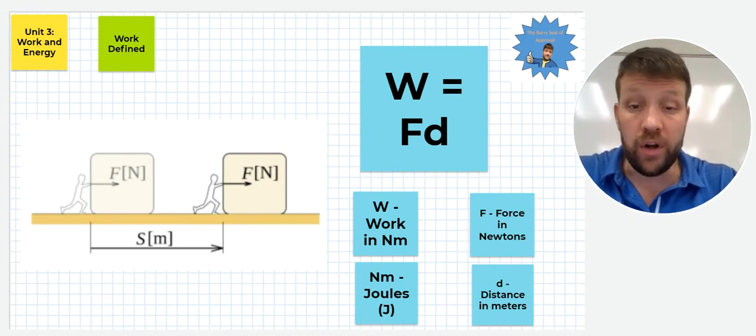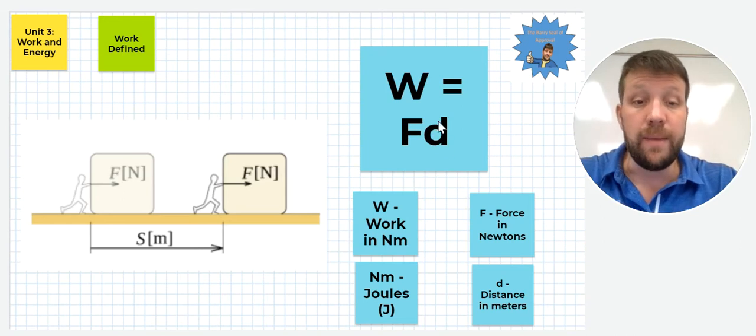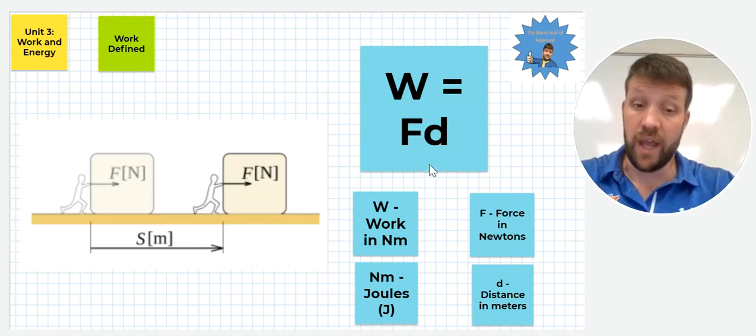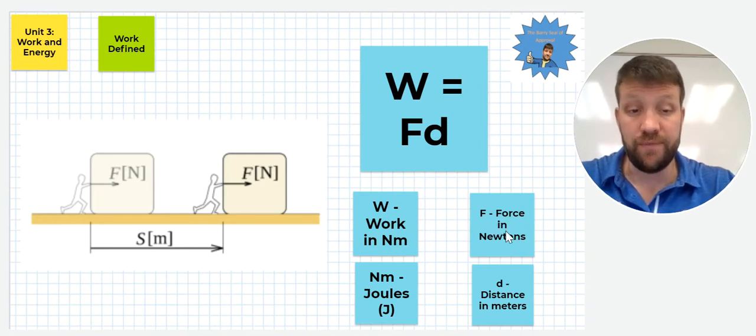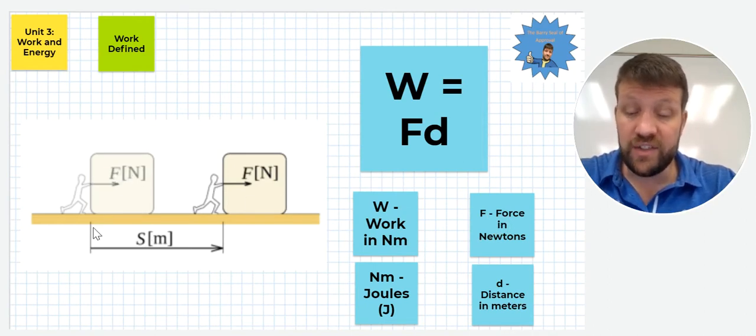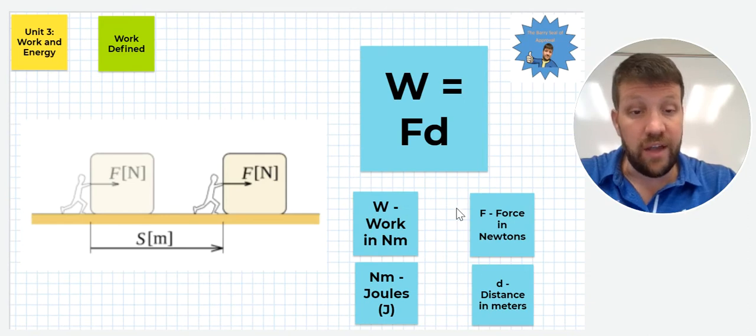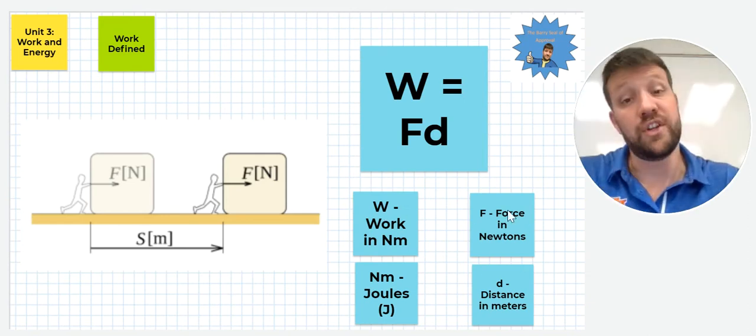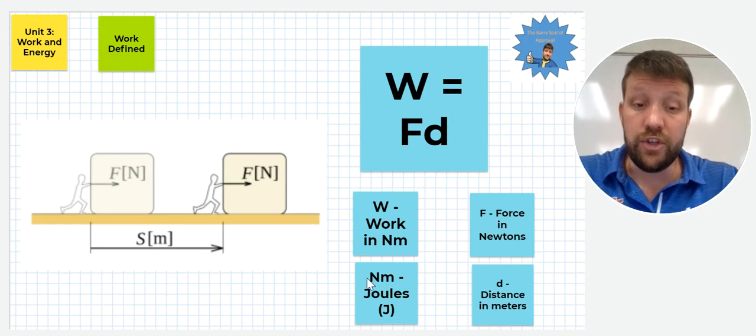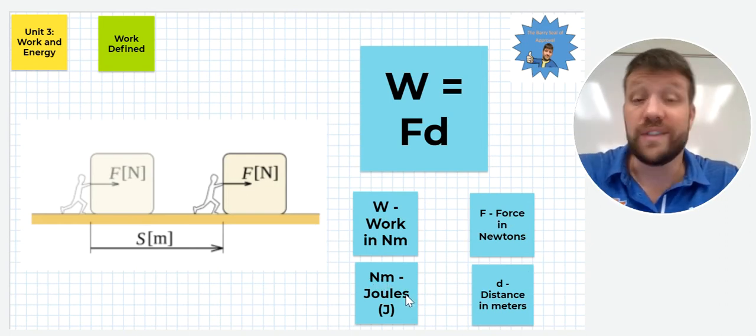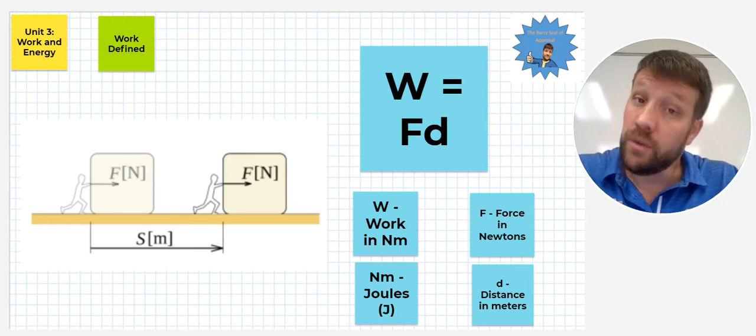First, we need to define work. Work is defined as a force being applied to an object that moves it some distance. W is going to be our work and force in newtons times meters because F is force in newtons and D is distance in meters. So we have someone here applying a force in newtons that's moving this object some distance here in meters. It's our basic definition for work in physics. Note also that newtons times meters are going to be equivalent to joules. That's going to be really important when we start looking at energy.